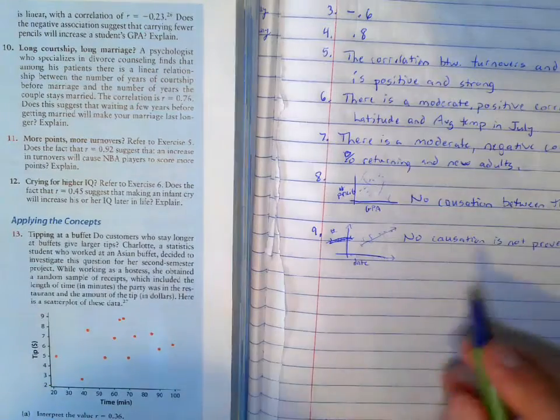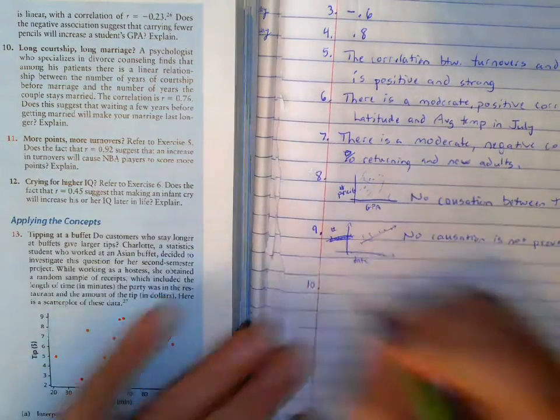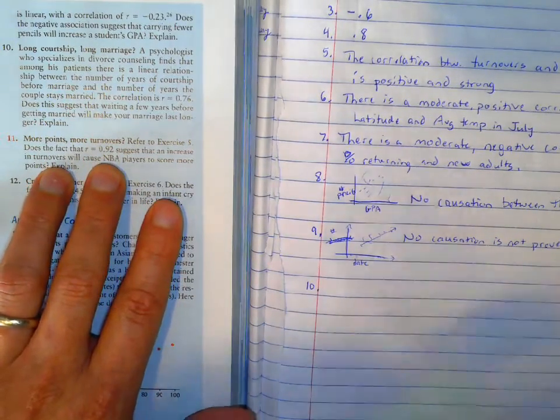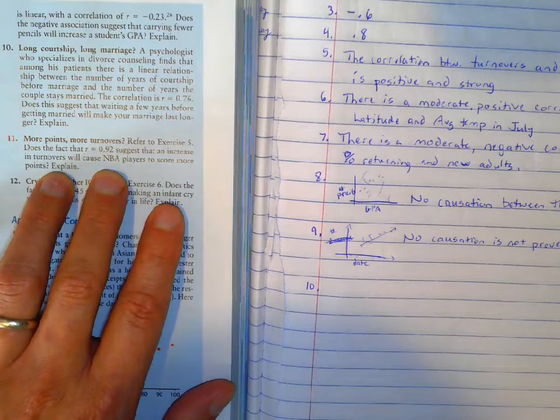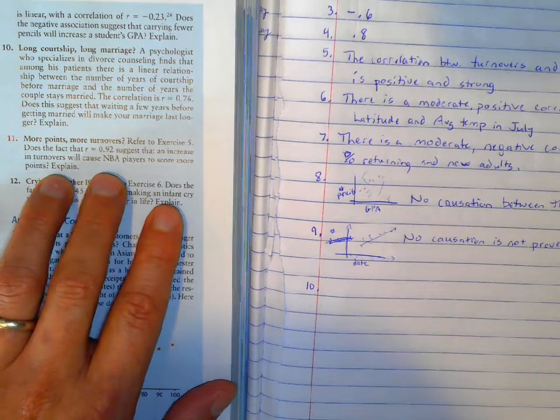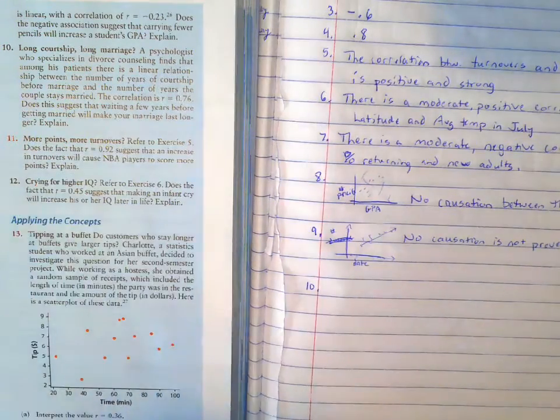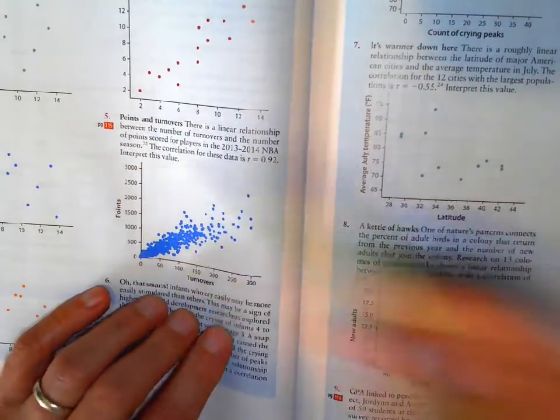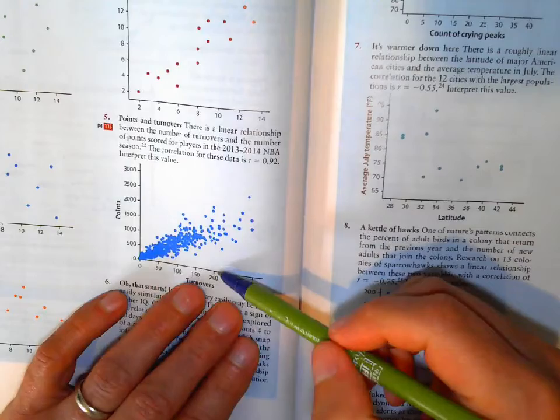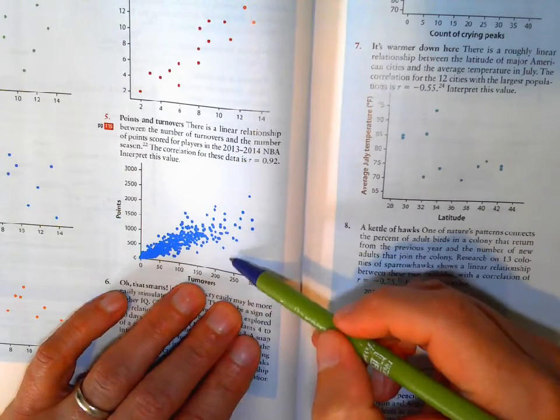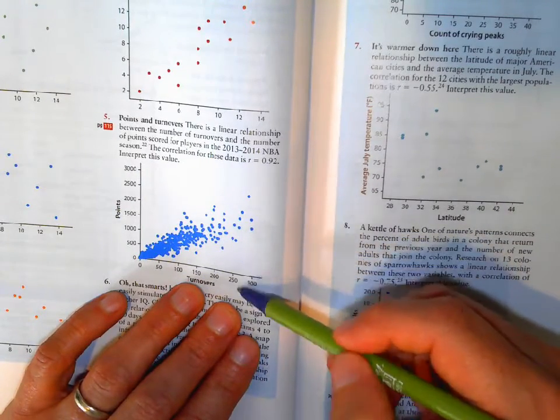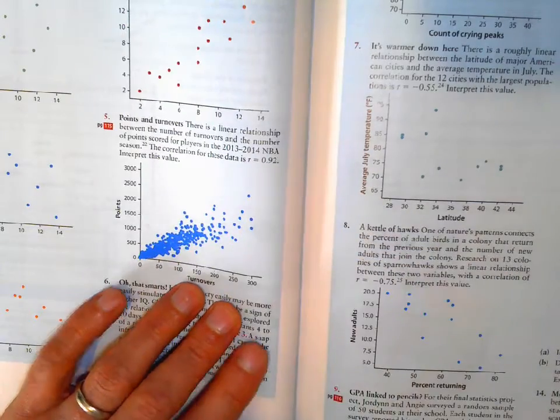And the last one here refer to the one we did earlier. Would it suggest that an increase in turnovers will cause NBA players to score more points? So in looking at this graph, we had the more turnovers they had, the more points they scored, right? So that means if I go out and play an NBA game, I should just turn the ball over every time and that means I'm going to score more. Because if the turnovers cause the number of points? No.